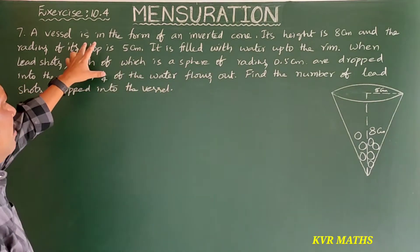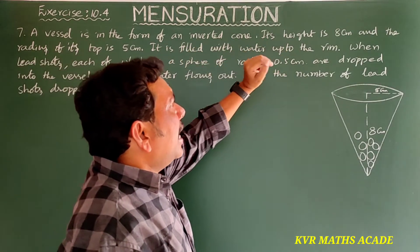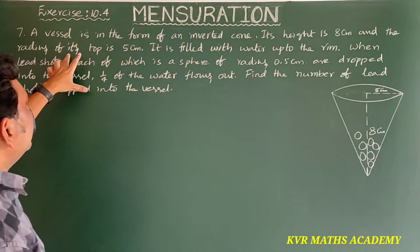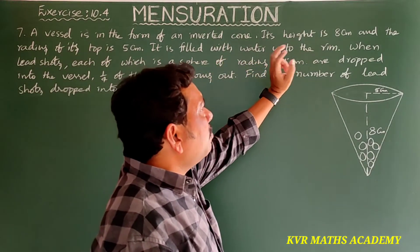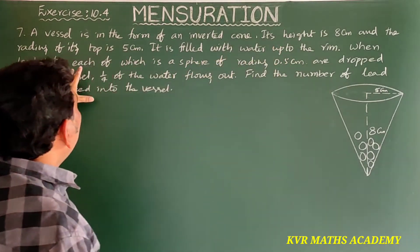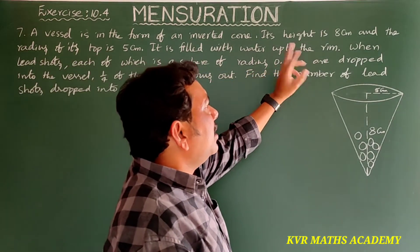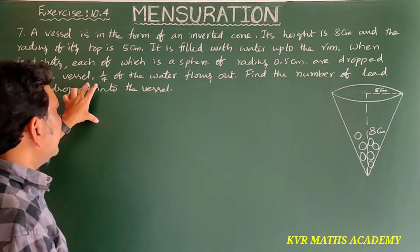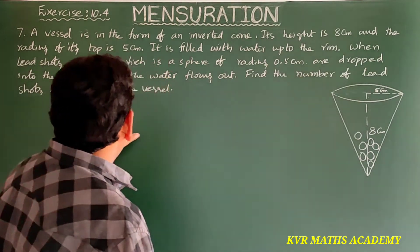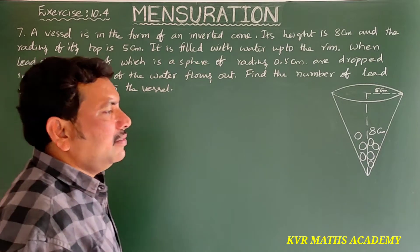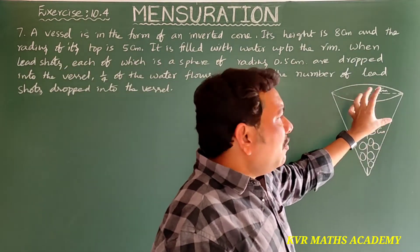This is the seventh question. A vessel is in the form of an inverted cone. Its height is 8 centimeters and the radius of its top is 5 centimeters. It is filled with water up to the rim. When lead shots, each of which is a sphere of radius 0.5 centimeters, are dropped into the vessel, 1/4 of the water flows out.